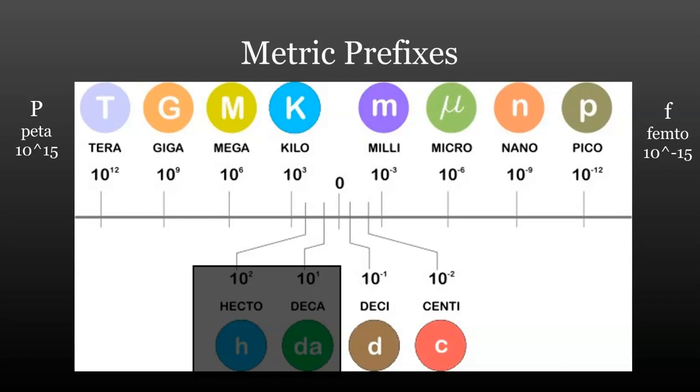The capitalization is important. A capital prefix will always have a positive exponent. This allows us to distinguish between MEGA, capital M, and MILLI, lower case M, for example.